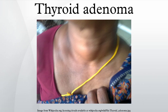A thyroid adenoma is distinguished from a multinodular goiter of the thyroid in that an adenoma is typically solitary and is a neoplasm resulting from a genetic mutation in a single precursor cell. In contrast, a multinodular goiter is usually thought to result from a hyperplastic response of the entire thyroid gland to a stimulus, such as iodine deficiency. Careful pathological examination may be necessary to distinguish a thyroid adenoma from a minimally invasive follicular thyroid carcinoma.